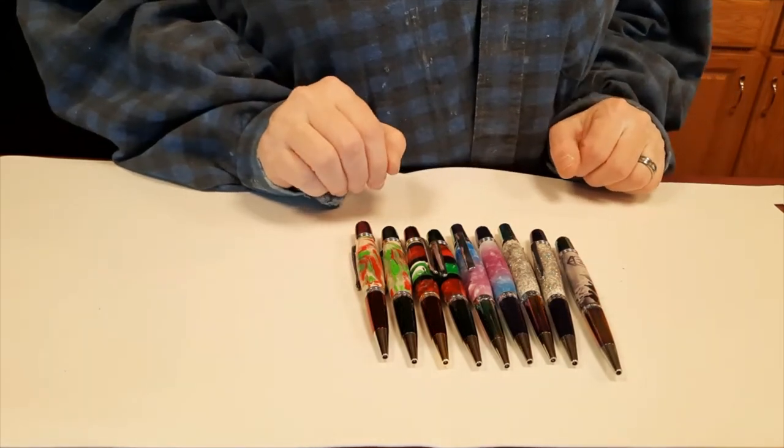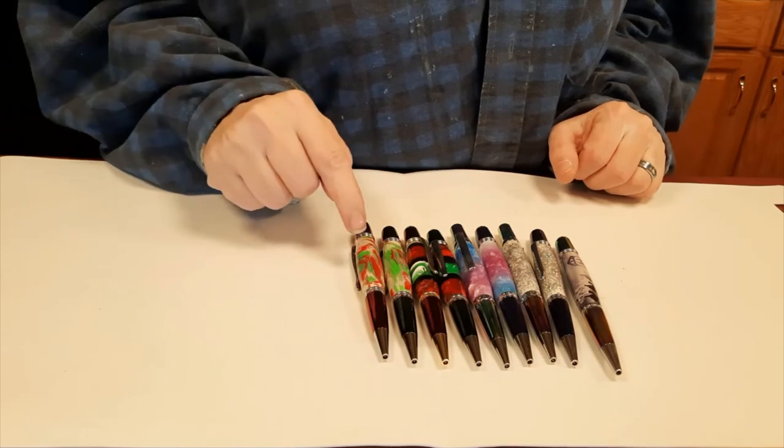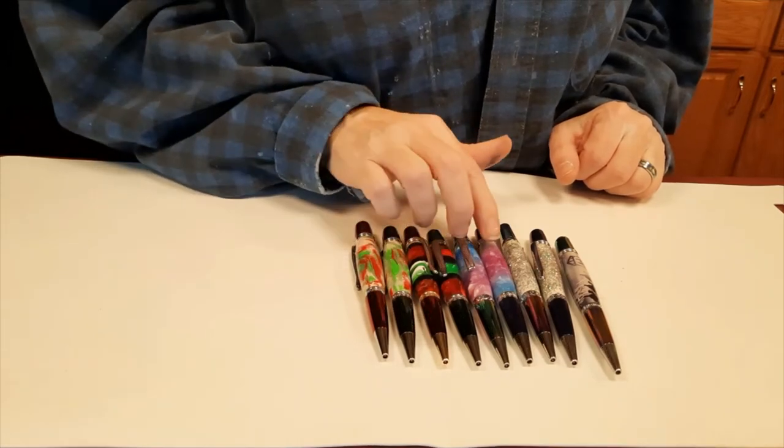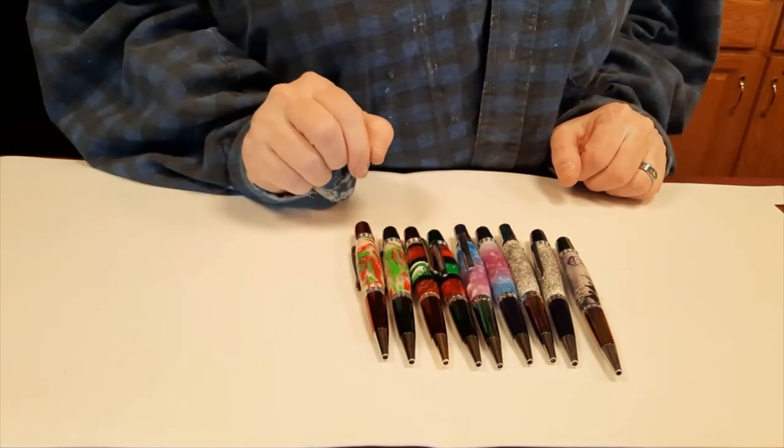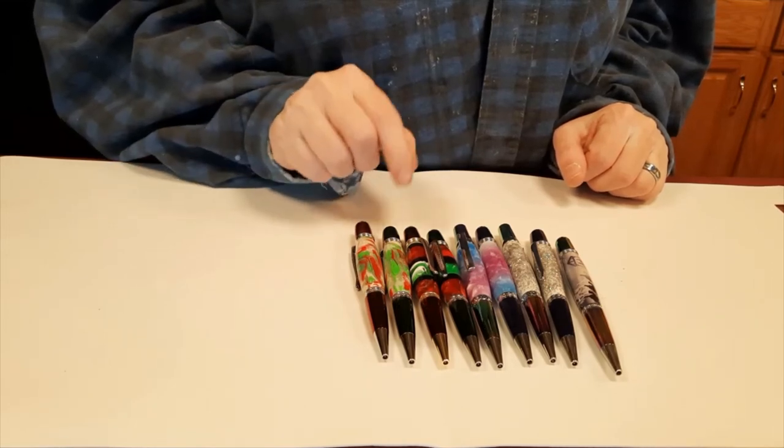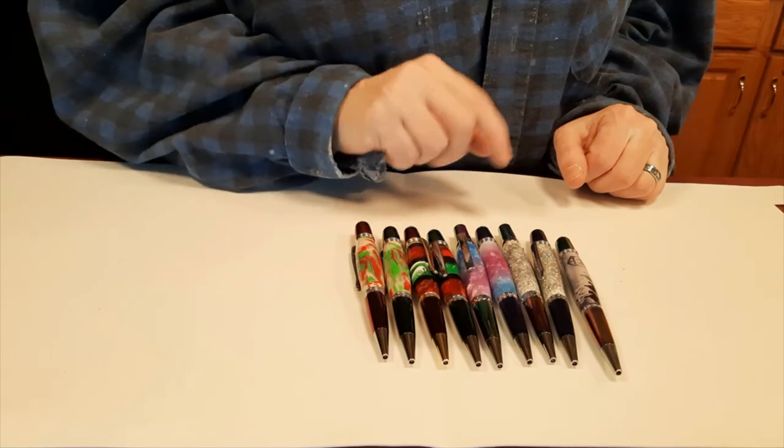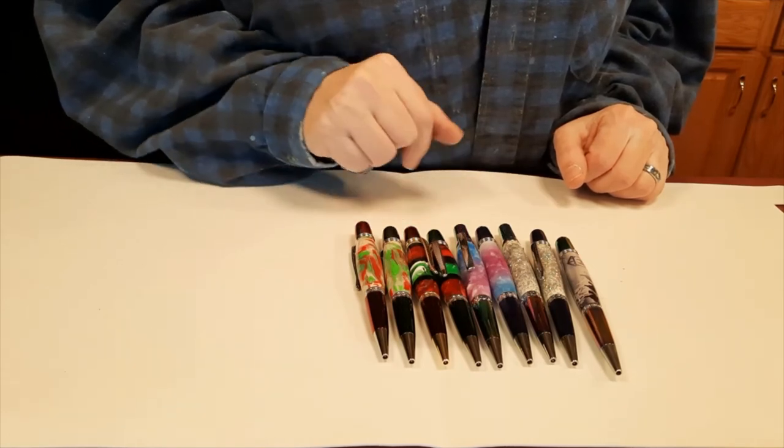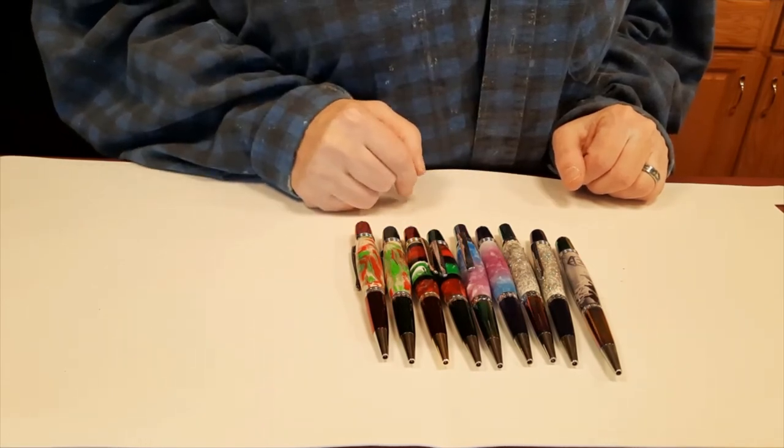One of the nice things with the Prism kits, as you see here by these that are in the duplicates, you only need half of a blank to make a prism. So you can get two pens out of one blank. It's a nice economical way to get multiple pens and only have to purchase one blank.